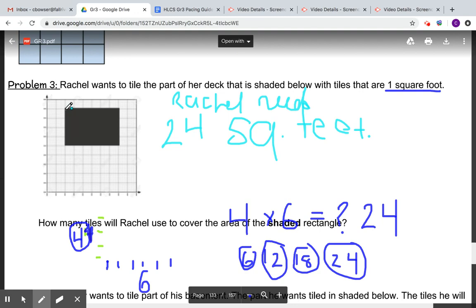So not only did I use the length and the width to help me solve that, but I also used multiplication, which was more efficient in this case because it's hard to draw tiles and keep it completely neat. That's not the most efficient strategy.